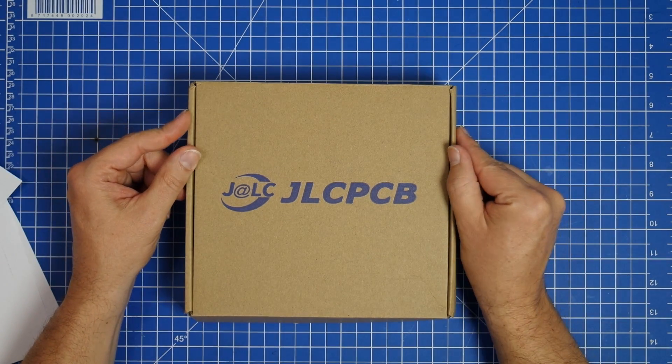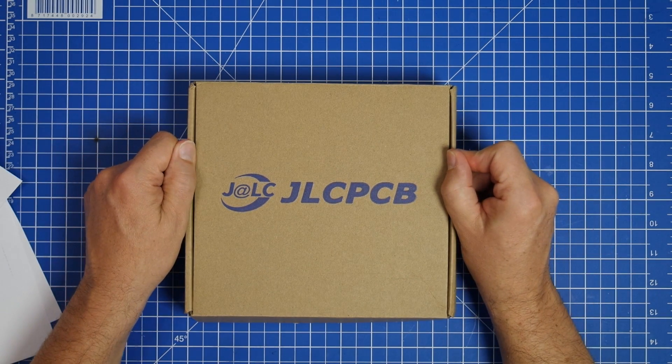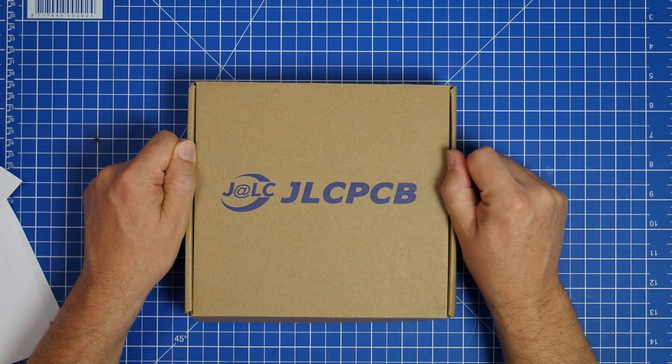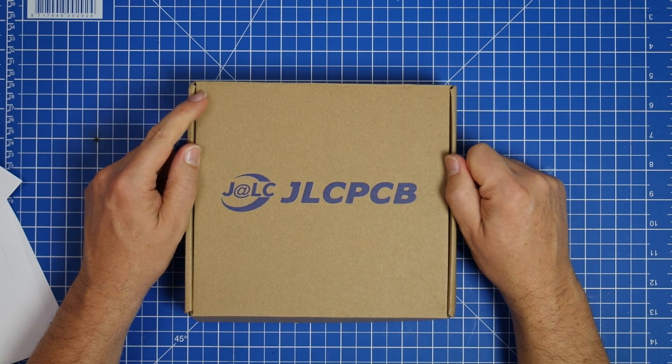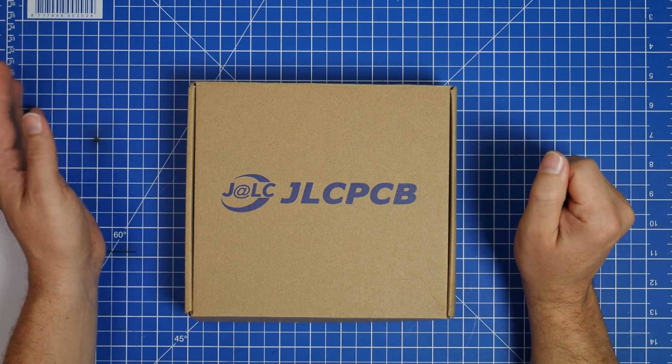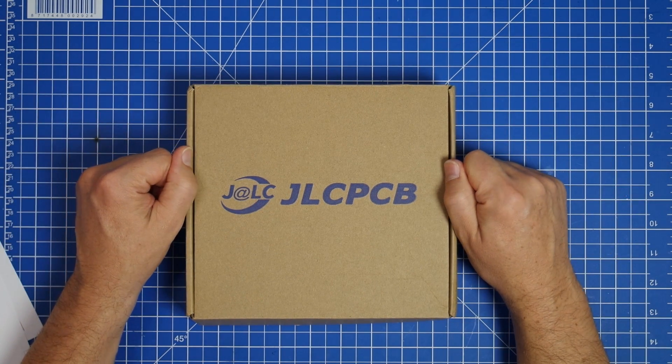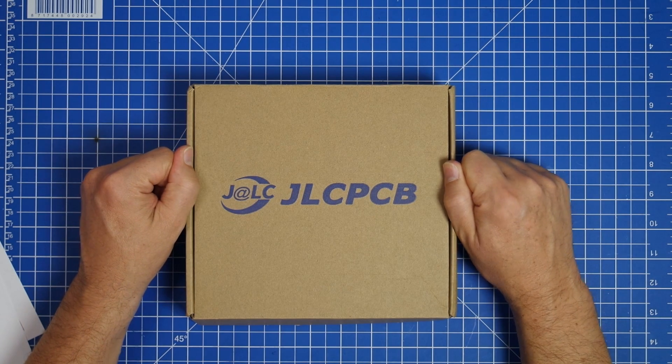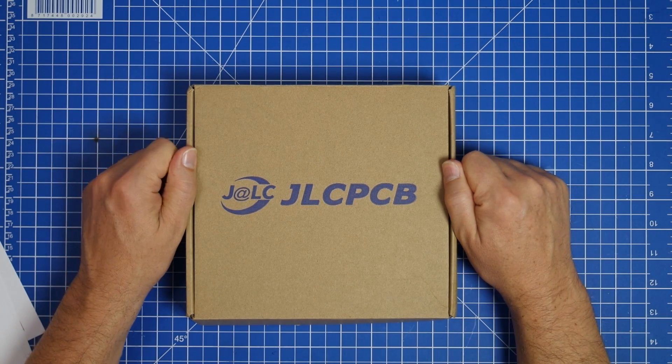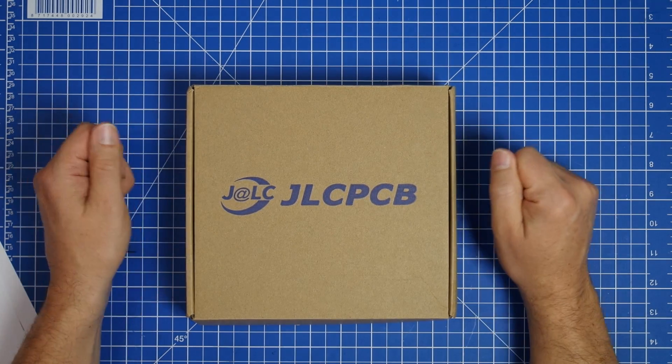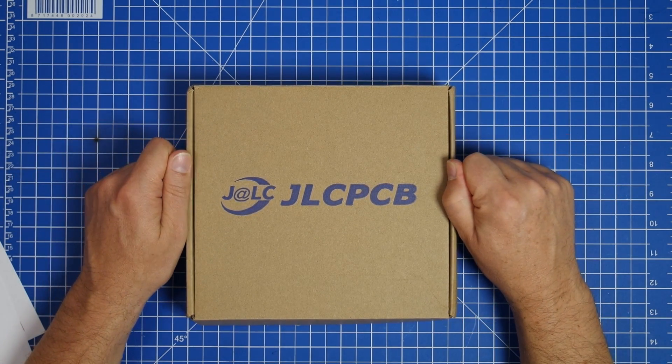Now, if you wonder who JLCPCB is, JLCPCB is one of, if not the biggest PCB production plant in China. And for the past 10 years, they have been growing on the Chinese market. And they're going global right now. Just a few numbers that I was able to get up. JLCPCB has more than 290,000 customers in China. And they have 9,000 online orders per month. That is really big. That is extremely big.